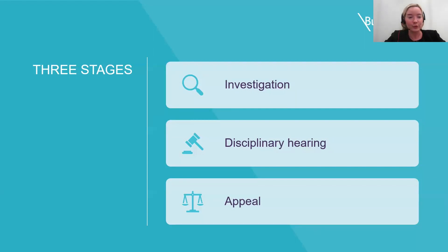The employer will then usually adjourn to consider whether to uphold the allegations, and if so, what disciplinary sanction to apply in the circumstances. Disciplinary sanctions will vary from first warnings to dismissal without notice. All of this depends on various factors, such as the seriousness of the allegations and the employee's previous disciplinary record. It's also important that the employer takes into account any mitigating circumstances that are put forward by the employee.